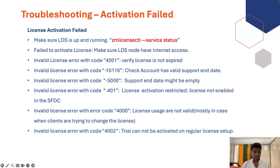Activation failure: if you're getting an activation fail during license activation, here are some error codes. Make sure your LDS is running — you can run the command `zm license ctl-service status`. If activation fails, make sure the node has internet access. Error code 4001: verify the license is not expired. Error code -10116: check your account has valid support — if you don't have valid support, you will not be able to activate the license. Error code 500: your account does not have valid support. Error code 401 (license activation restriction): your license is not available in SOTC, meaning your license is not active — it has a valid expiry date but is not active.